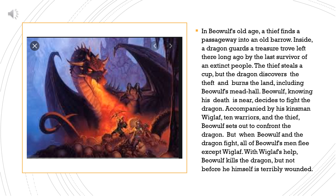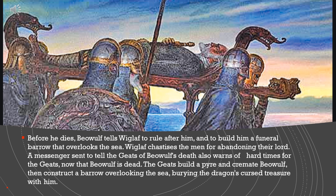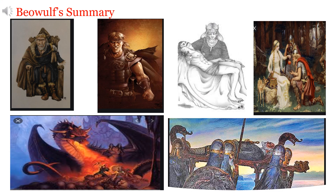When Beowulf and the dragon fight, all of Beowulf's men flee except Wigglop. With Wigglop's help, Beowulf kills the dragon, but not before he himself is terribly wounded. Before he dies, Beowulf tells Wigglop to rule after him and to build him a funeral barrow that overlooks the sea. Wigglop chastises the men for abandoning their lord. A messenger is sent to tell the Jeets of Beowulf's death and warns of hard times ahead. The Jeets build a pyre and cremate Beowulf, then construct a barrow overlooking the sea, burying the dragon's cursed treasure with him.